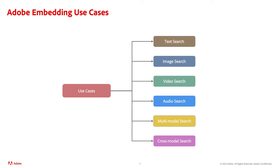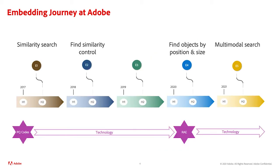The Adobe Search team uses ML embeddings to enable effective search for text, image, video, and audio, as well as multimodal and cross-modal searches. One important use case for ML embeddings is Image Similarity Search. Adobe Stock released the first version in 2017. In subsequent years we added features including search by color, content, and composition using three embeddings, search by object position and size, and we're also working on multi-image similarity search, which enables searching on various elements selected from multiple images.